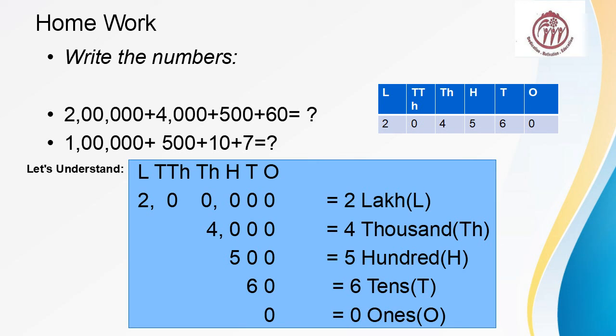6 under tens, 5 under hundreds, 4 under thousands. And there is no number under ten thousands place, so 0. We will put 0 over there. And 2 under lakhs. So if we read this number, this is 2 lakh 4 thousand 5 hundred 60.